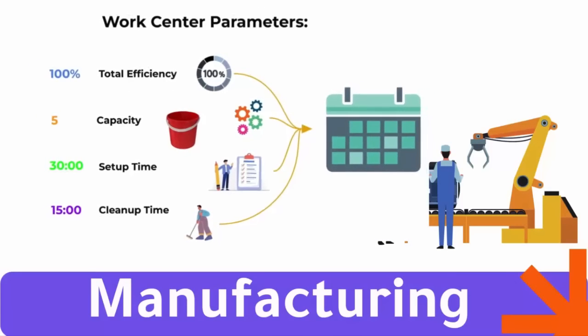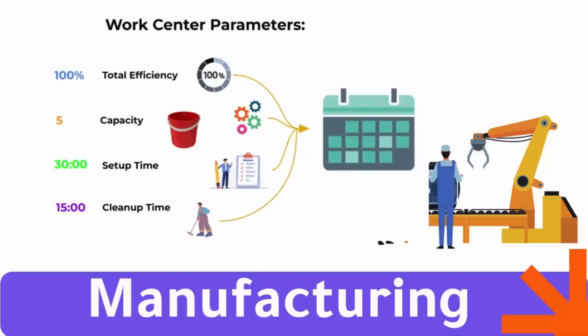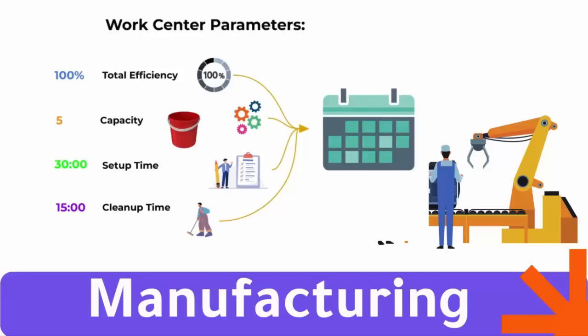When we configure values for efficiency and capacity, along with setup and cleanup times, Odoo factors these numbers into the work center schedule. Being able to assign custom values to each work center ahead of time gives us a more realistic picture of what our short-term manufacturing plan should look like.